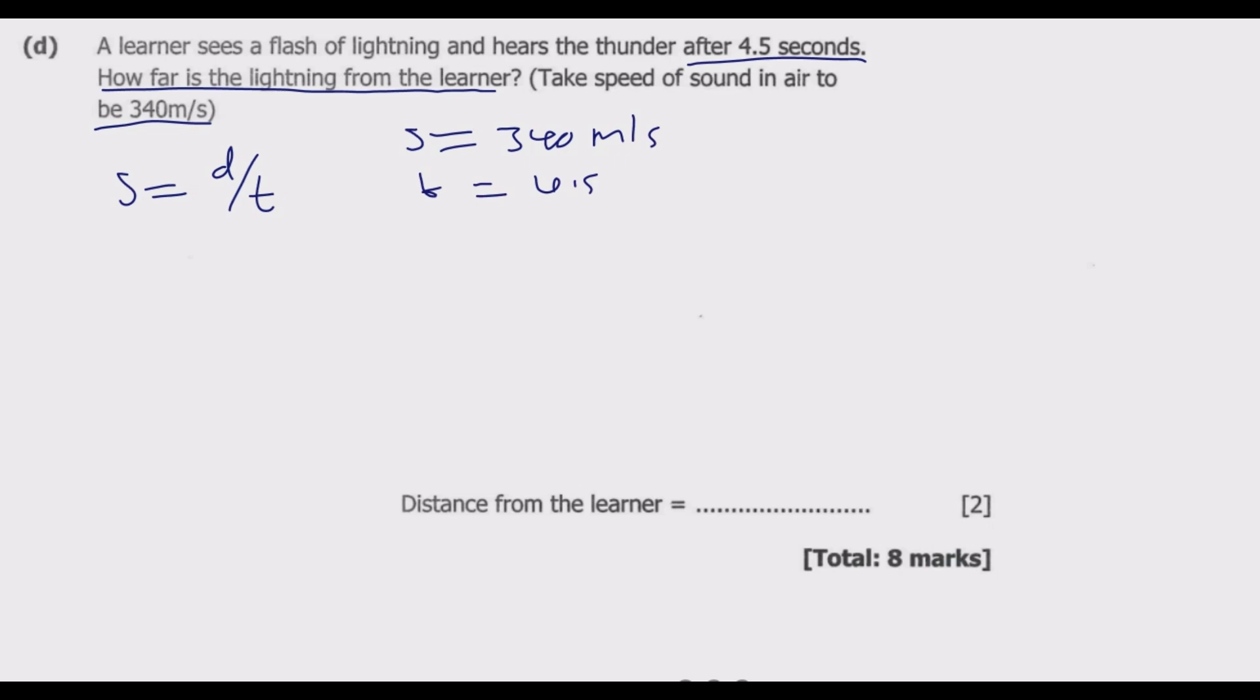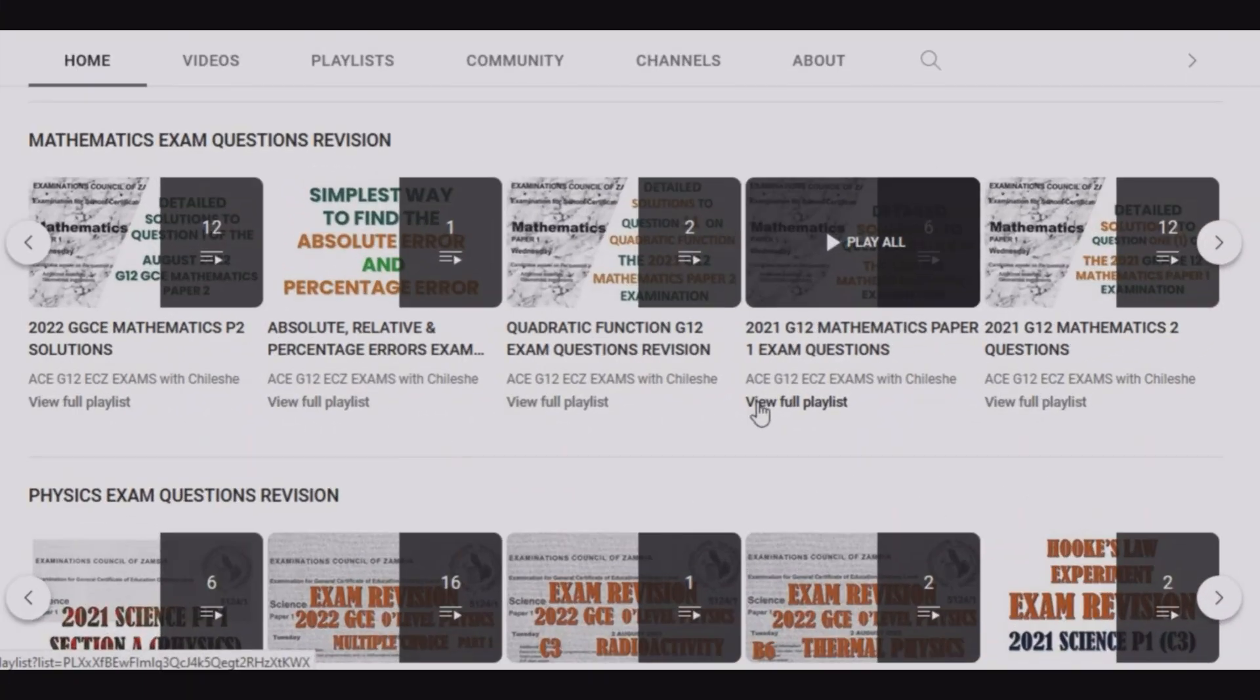Speed is given by distance over time. Speed is 340 meters per second, time is 4.5 seconds. To find distance, we make D the subject of formula. Distance equals S multiplied by T. Distance equals 340 meters per second multiplied by 4.5 seconds, which gives us 1530 meters.